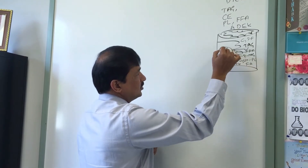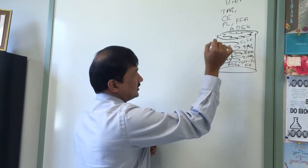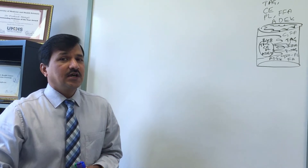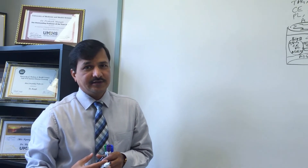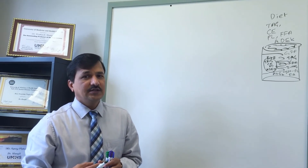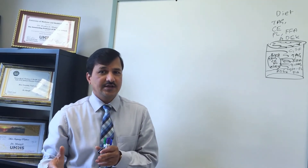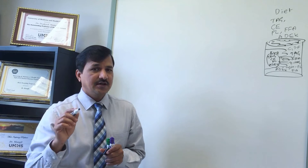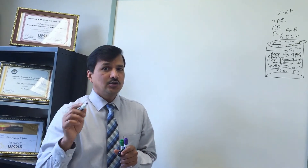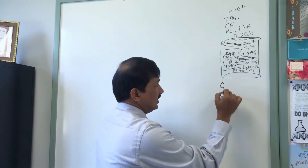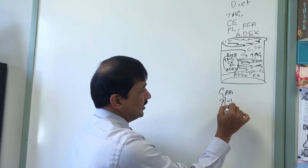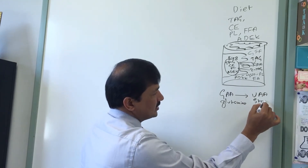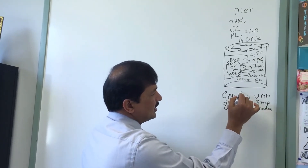Once these molecules undergo simple diffusion into the enterocyte, they are re-esterified into triacylglycerol, cholesterol ester, phospholipid, and fat-soluble vitamins A, D, E, and K. These are loaded onto ApoB48, which is synthesized in the intestine. ApoB48 synthesis involves mRNA editing — the mRNA for ApoB100 undergoes editing by the enzyme cytidine deaminase.